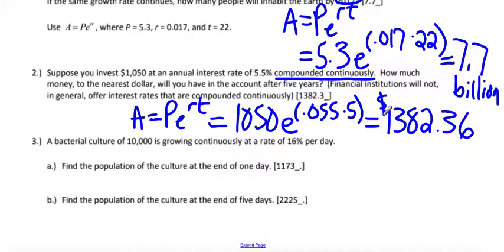Another thing that grows continuously would be like a bacteria culture. So if you have 10,000 growing continuously, it's a PERT equation, and a rate of 16% per day. So we want to find it at the end of day one. So we started with 10,000. That was our principal. E to the 0.16 times one day.